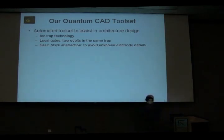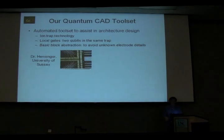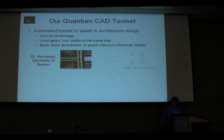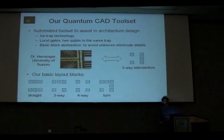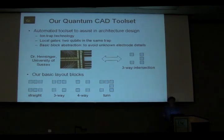A bit about our methodology. We have a toolset we're working on intended for the computer-aided design of quantum circuits. It allows us to lay out, schedule, and evaluate circuits both in terms of latency, area, error analysis, and more. In order to do layouts, we needed to assume a technology — we're working in ion traps. We also assume local gates, so two qubits have to come together in order to perform an operation. Since electrode configurations are changing all the time, we needed some kind of abstraction for our layouts.